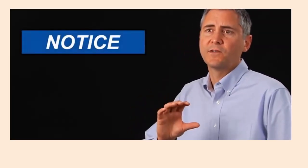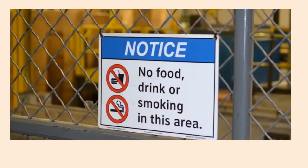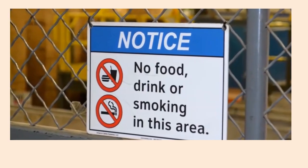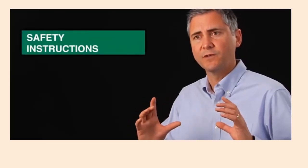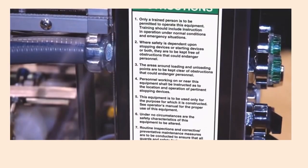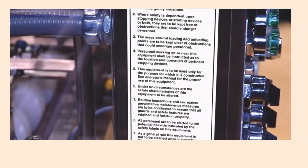There are two other categories of signs according to ANSI. Notice signs, which are blue background, indicate a hazard that is non-personal injury related. They're to be used for housekeeping rules, security type of signage, visitor sign-in procedures, that type of thing. And then you have the safety instructional message — it could be safety instructions, safe boiler shutdown procedure, or lockout procedure. The more specific, the better.